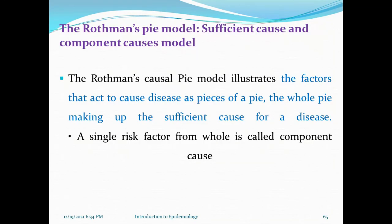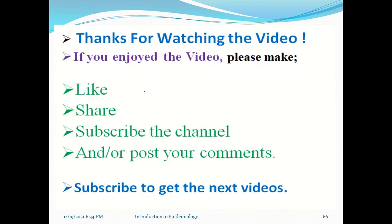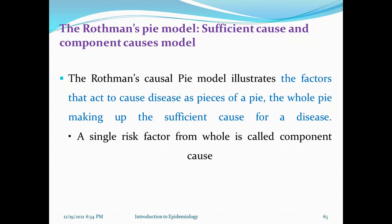The last model is Rothman's pie model. The components of Rothman's pie model illustrate the factors that cause disease as sections of a pie. The whole pie makes up a sufficient cause for the disease. A single factor from the whole is called a component cause.